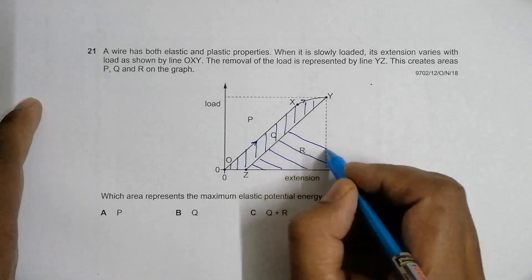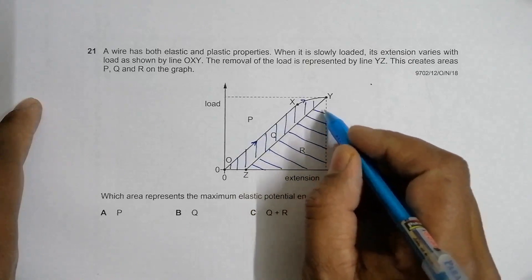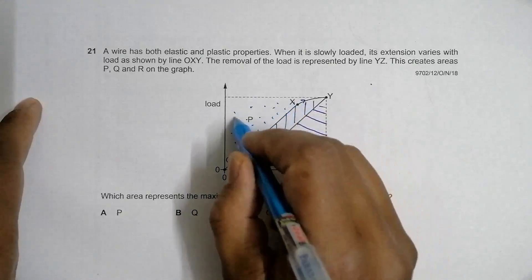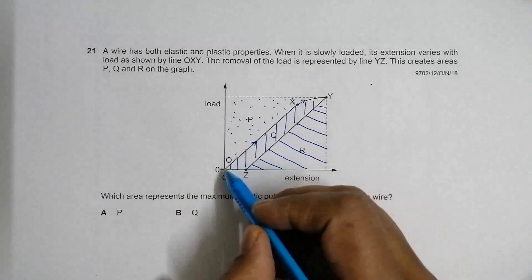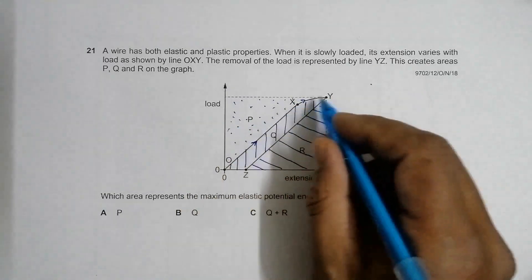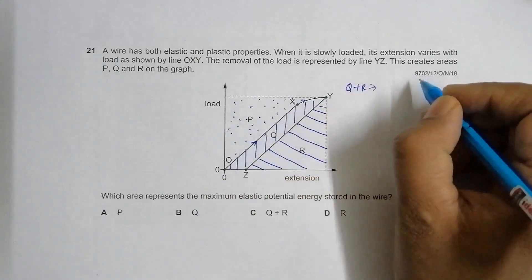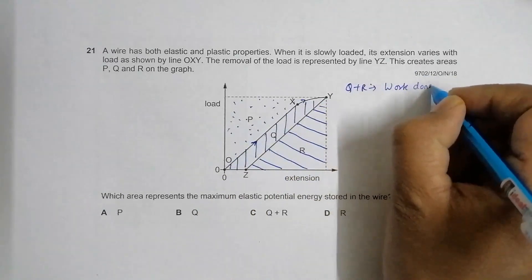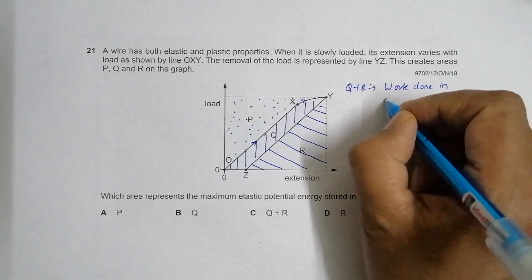For area Q, the pattern will be like this. For area R, this will be the pattern. For area P, this is the pattern. As we extend it from O to X to Y, the area Q plus R represents the work done in extending the wire.